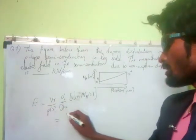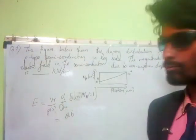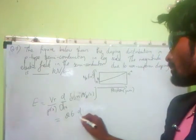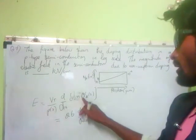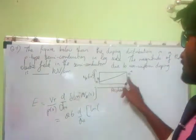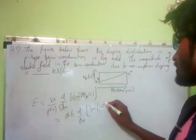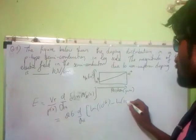This will be equal to Vt, which is 26. So we go for d by dx of ln of Na of x. The ln of the first one is 10 to the power 16. So 10 to the power 16 minus ln of 10 to the power 14.